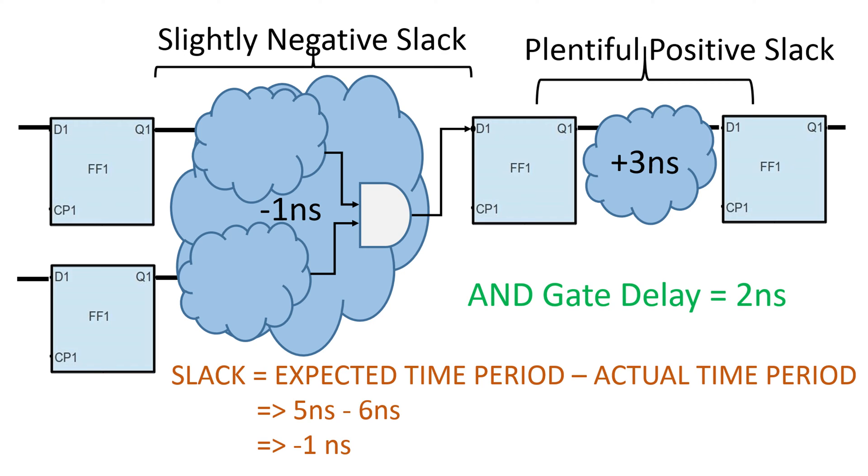Okay, let me tell you the solution. As we know there exists a very fast path adjacent to the critical paths having a slack of positive 3 nanosecond. So why not move some of the combinational path delay into this fast path. So, let us move this AND gate into this fast path.